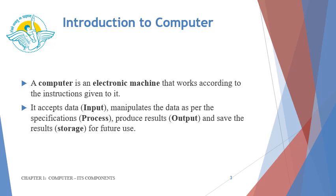Let us begin with Introduction to Computer. A computer is an electronic machine that works according to the instructions given to it. It accepts the data, which is called the input, manipulates the data as per the specifications, which is called the processing, produces results, that is nothing but the output, and saves the results in the storage devices for future use. So any computer follows an IPO cycle, which means input process output cycle.